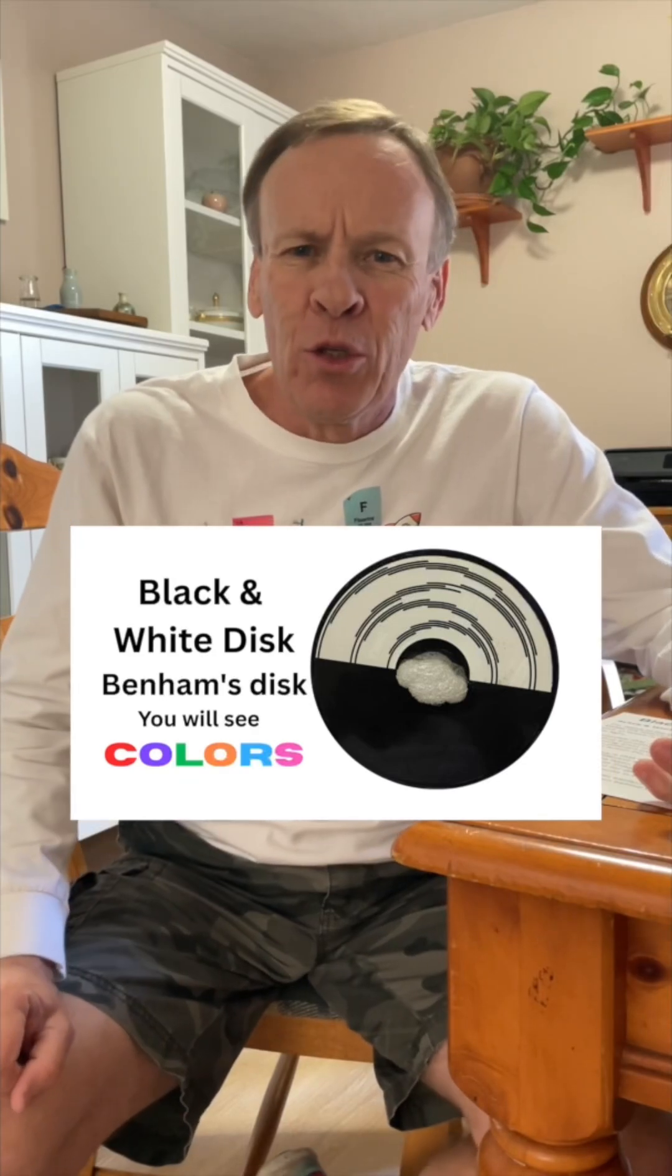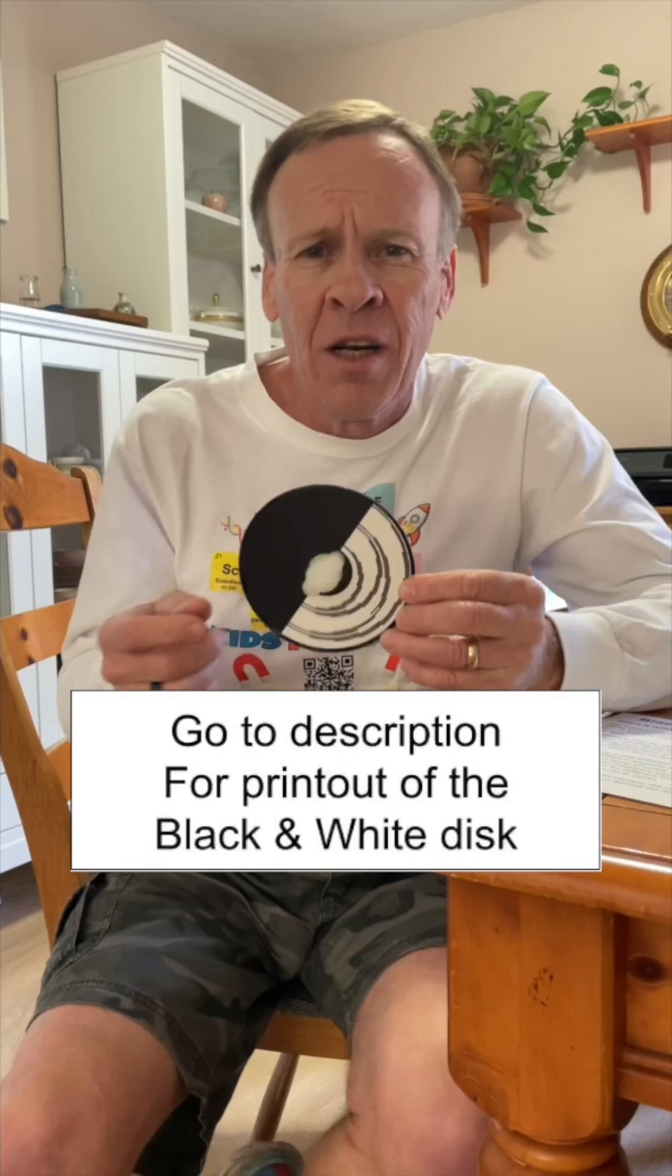Welcome back to Kids Fun Science. My name is Ken. Today's experiment is a black and white disc illusion that will make you see colors. So what you need for this experiment is a pattern that has the black and white design, which you can find in the description. You can have it printed out for yourself.